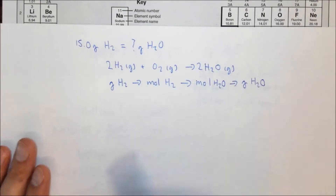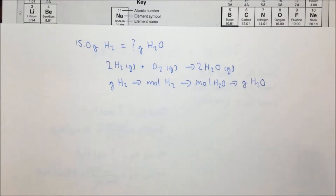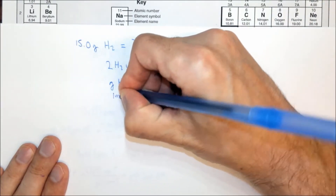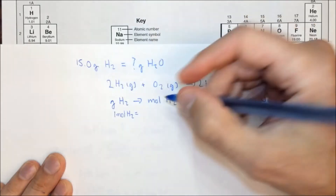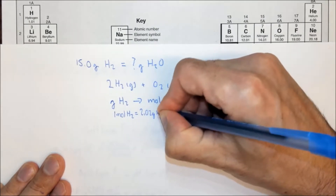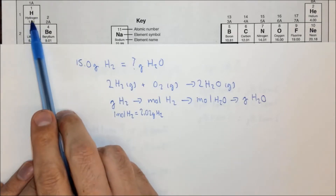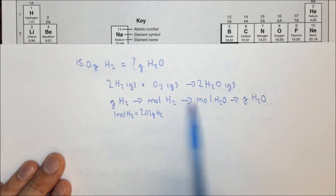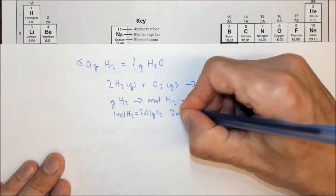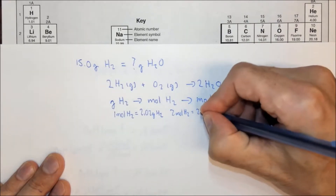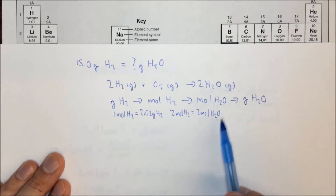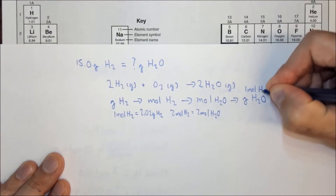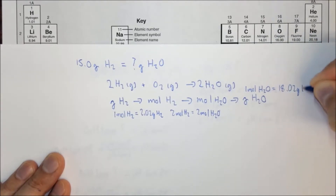You've done all of these steps in the previous examples — we just need to combine them. The relationship between grams of hydrogen and moles of hydrogen: one mole of H₂ equals 2 times 1.01, which is 2.02 grams of H₂. Note it's always one mole — from the periodic table this is the molar mass. We double it only because it's H₂. From moles of hydrogen to moles of water, we use the balanced chemical equation: two moles of hydrogen equals two moles of water. Then from moles of water to grams of water: 2 times 1.01 plus 16.00, so one mole of water equals 18.02 grams of water.